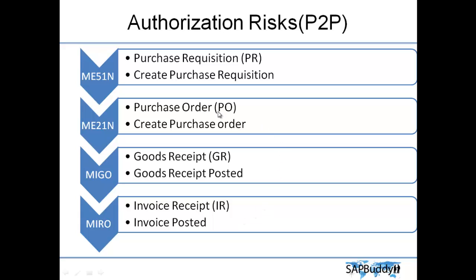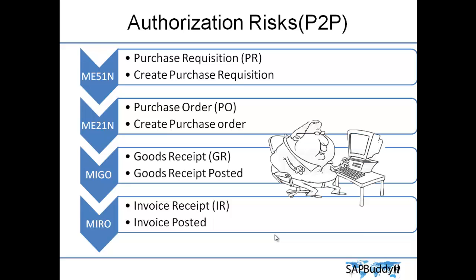Now let's assume we have all this authorization with one user who wants to do some intentional transaction — meaning some fraud. If the user also has authorization for XK01, which is for creating a bank account, they create a bank account. Then they create a purchase requisition or purchase order and route it to that bank account they created, and get a goods receipt done.